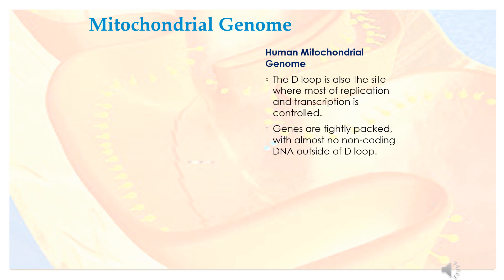The D loop is also the primary site where replication and transcription are controlled. Genes are tightly packed in the mitochondrial genome, with almost no non-coding DNA outside of the D loop region.